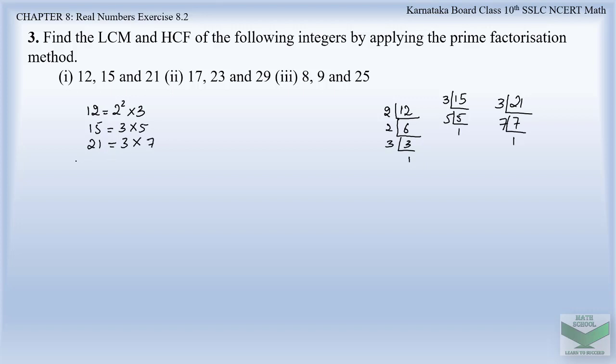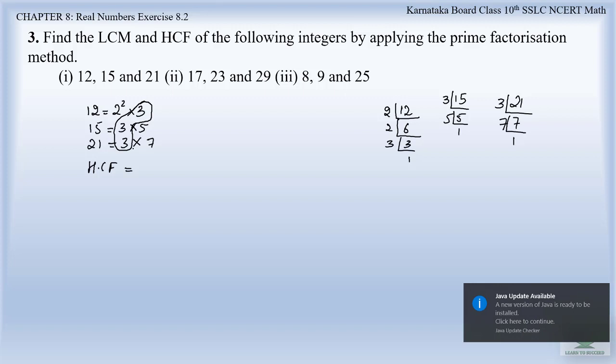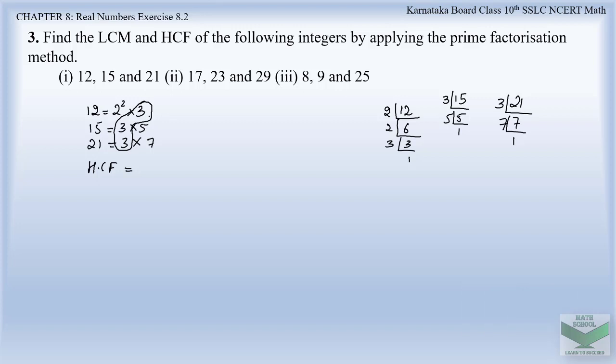So first of all after this we have to find the HCF. So we have to see the common factor between all the three integers. So 3 is common between all three integers with the power 1. So for HCF we have to take the lowest power of the common factor. Since the power is 1 for all the three integers we will take just 3. So the HCF for all these three integers is 3.